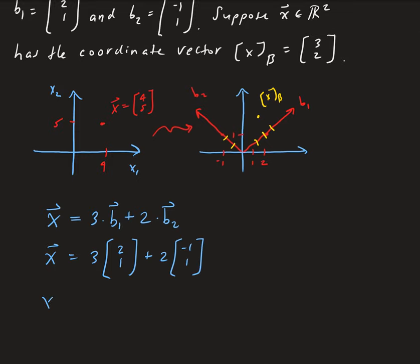And that's going to give us, so this will give us [6, 3], and [-2, 2].